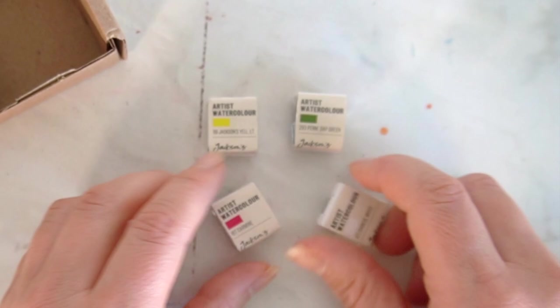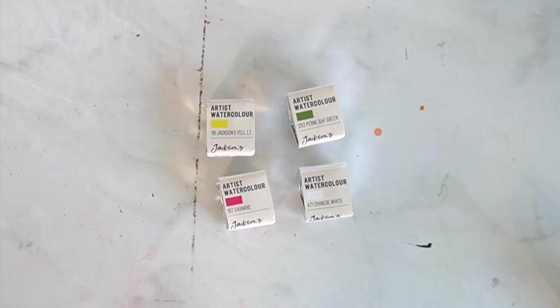I've gone for Jackson's yellow light, a Chinese white, I've also got the permanent sap green and a carmine. So I think all of these colors will be really nice to add to my collection. I didn't go for loads.